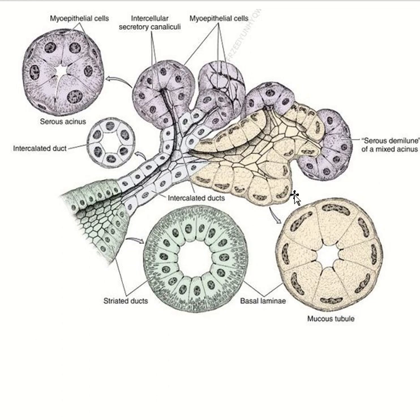And this is the mucous acini, and outside the mucous acini there are serous cells. So this type of pattern is known as the mucous acini with serous demilune.